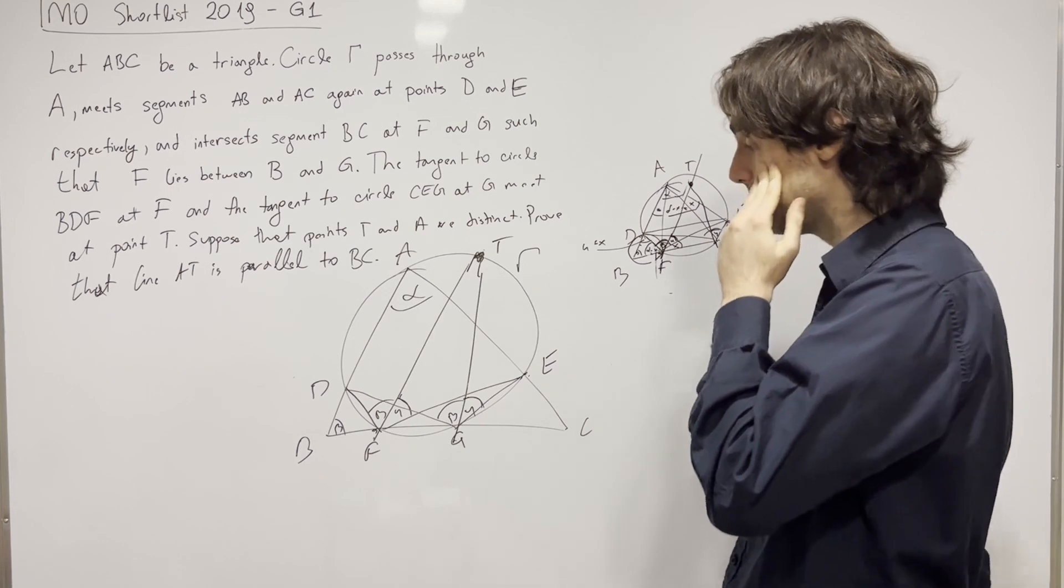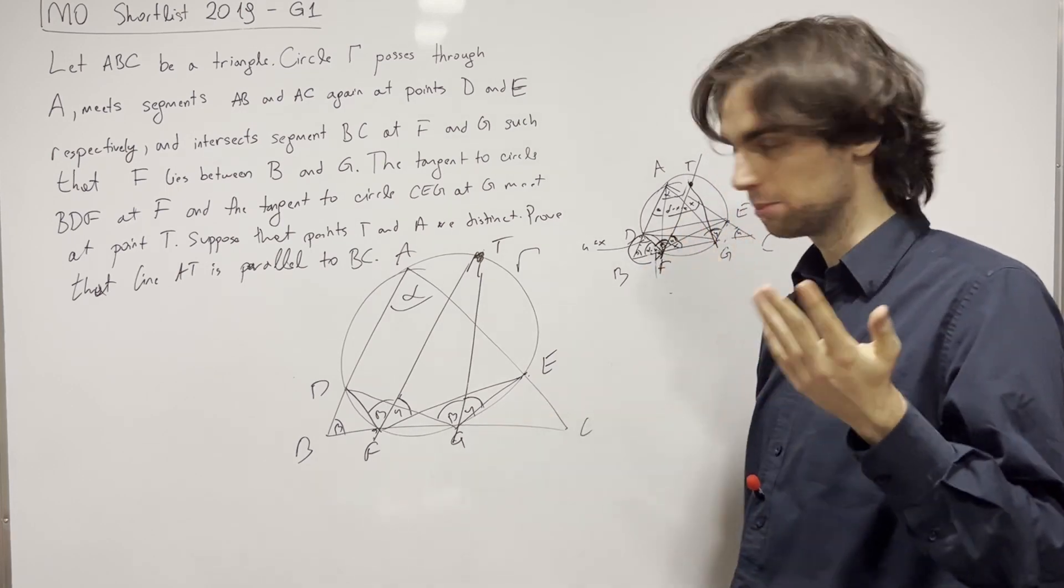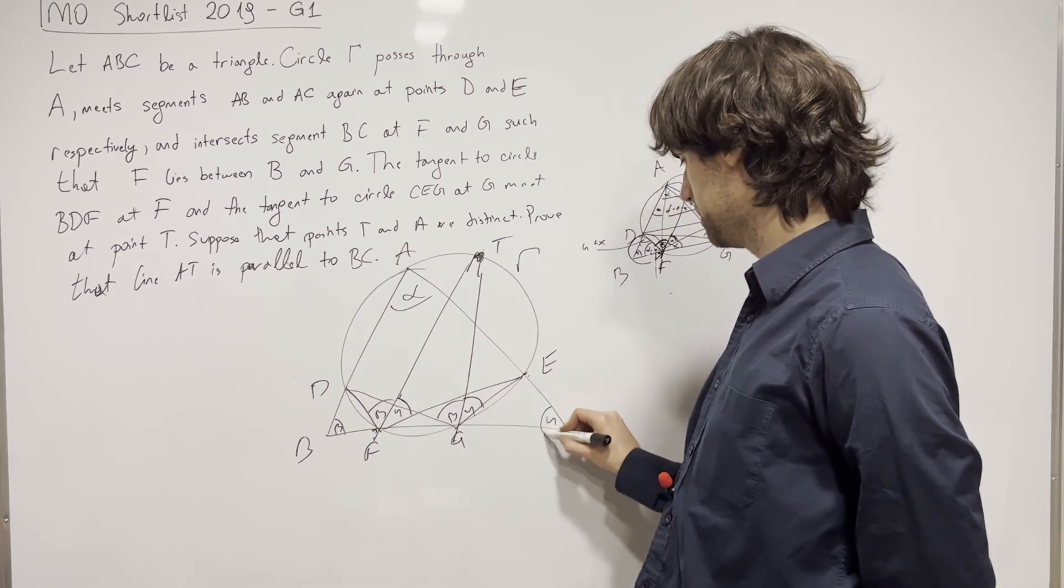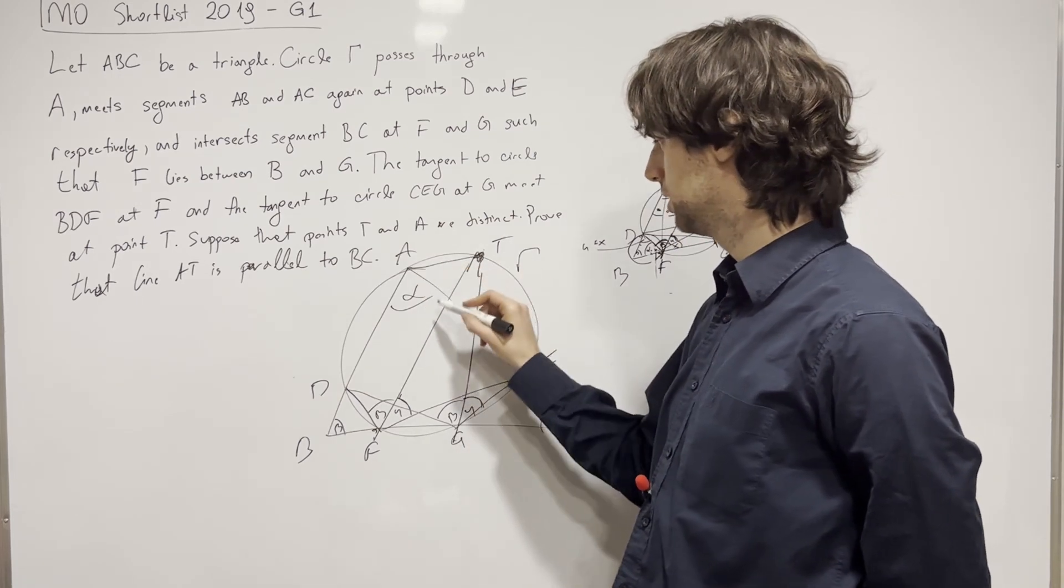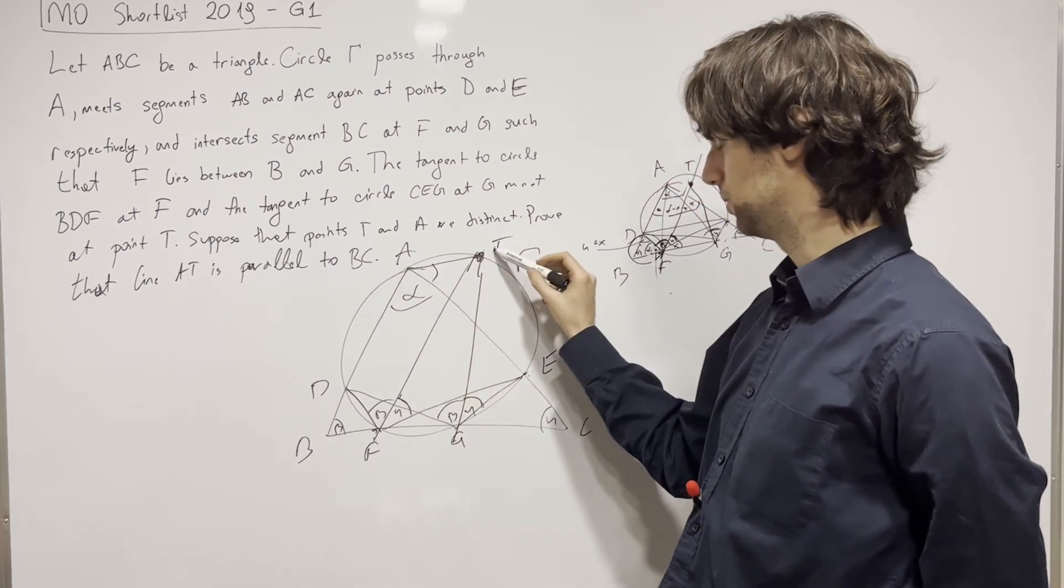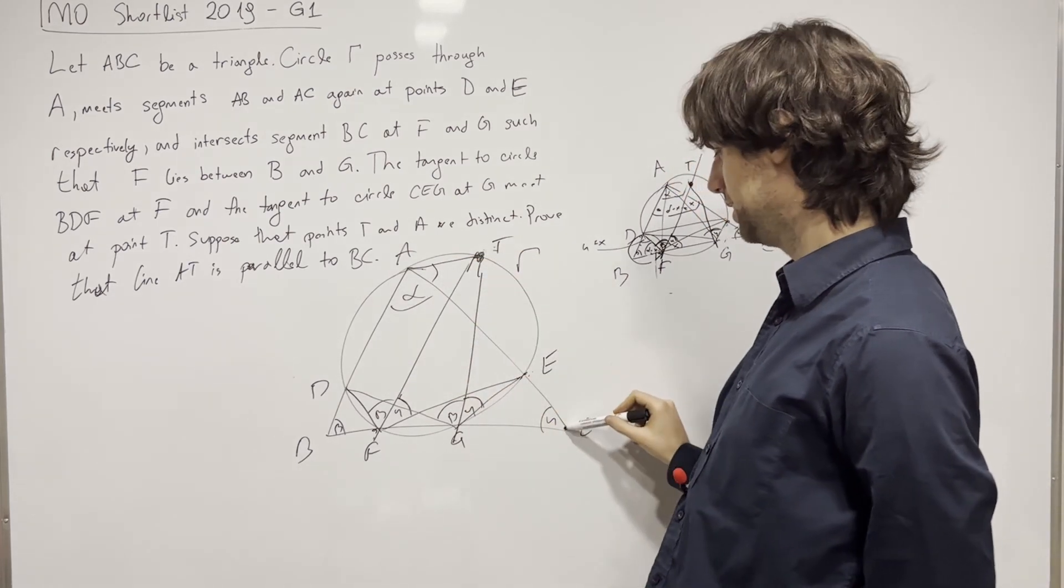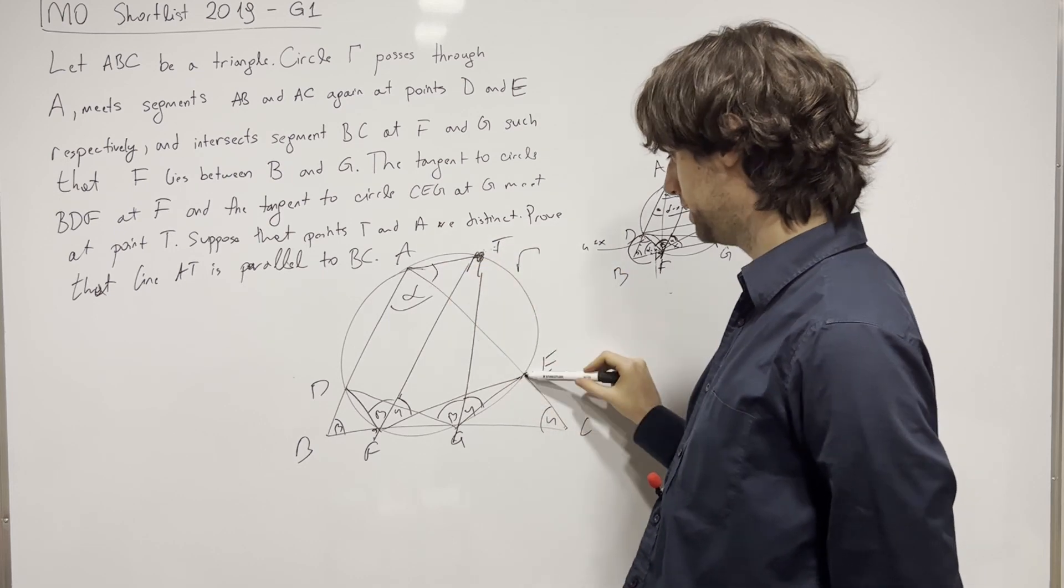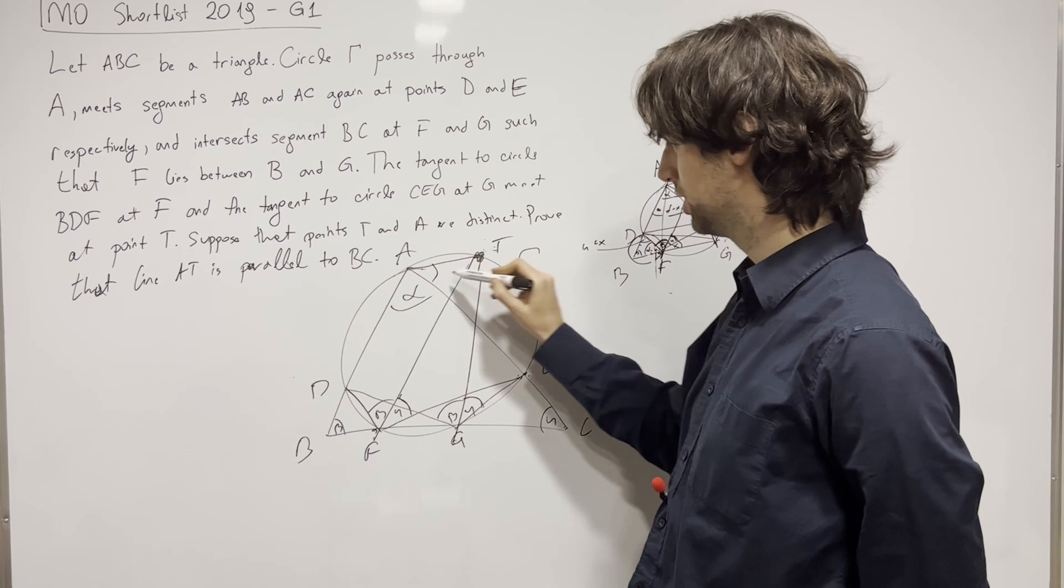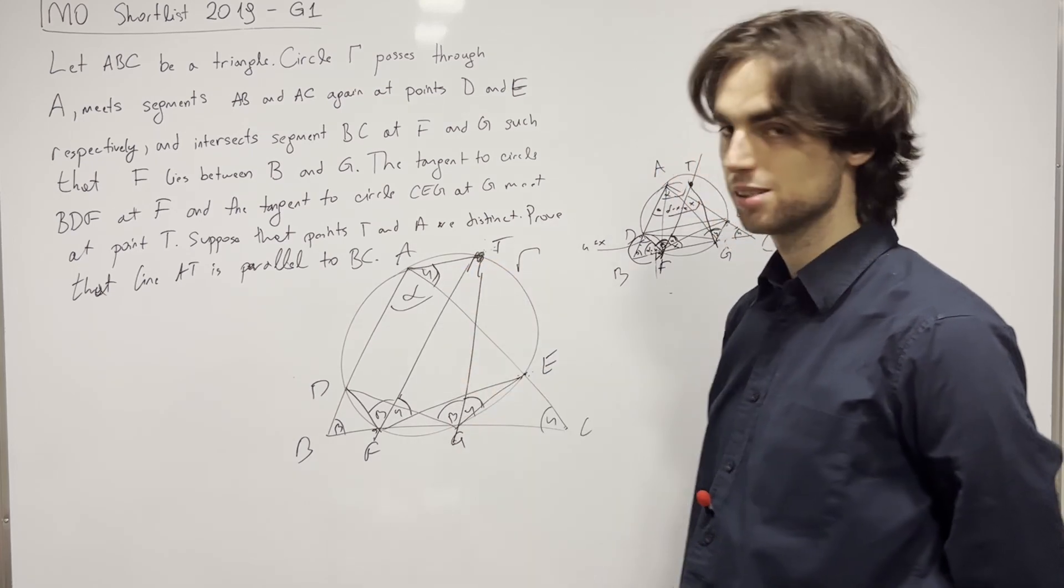And the answer is really, well, there are many ways to go about this, as with most problems. But one thing we need to prove is that this angle is gamma, which means that this angle right here should also be gamma. This is the angle TAE, which is, like TAC, needs to be gamma, which is TAE, which is TGE. So this is gamma. And thus we're done.